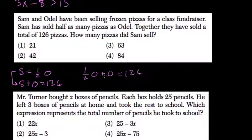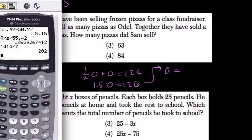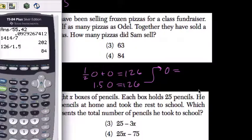So if we add these two terms, we have 1.5 Odell equals 126. To solve for Odell, we divide both sides by 1.5, and Odell equals 126 divided by 1.5. That's 84.